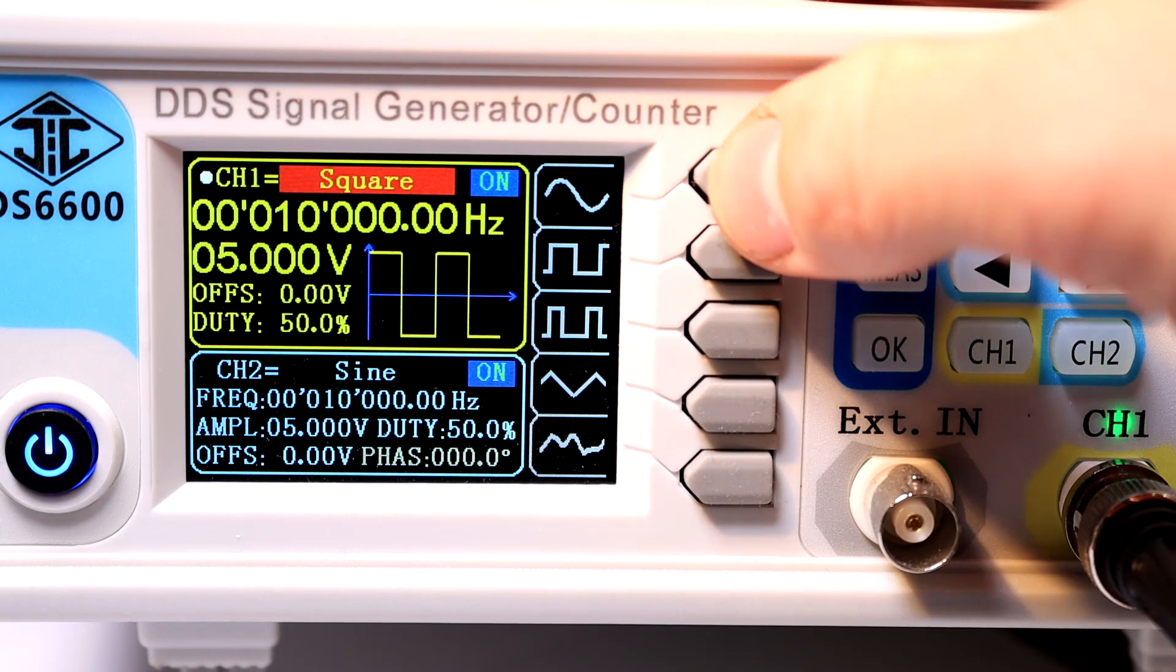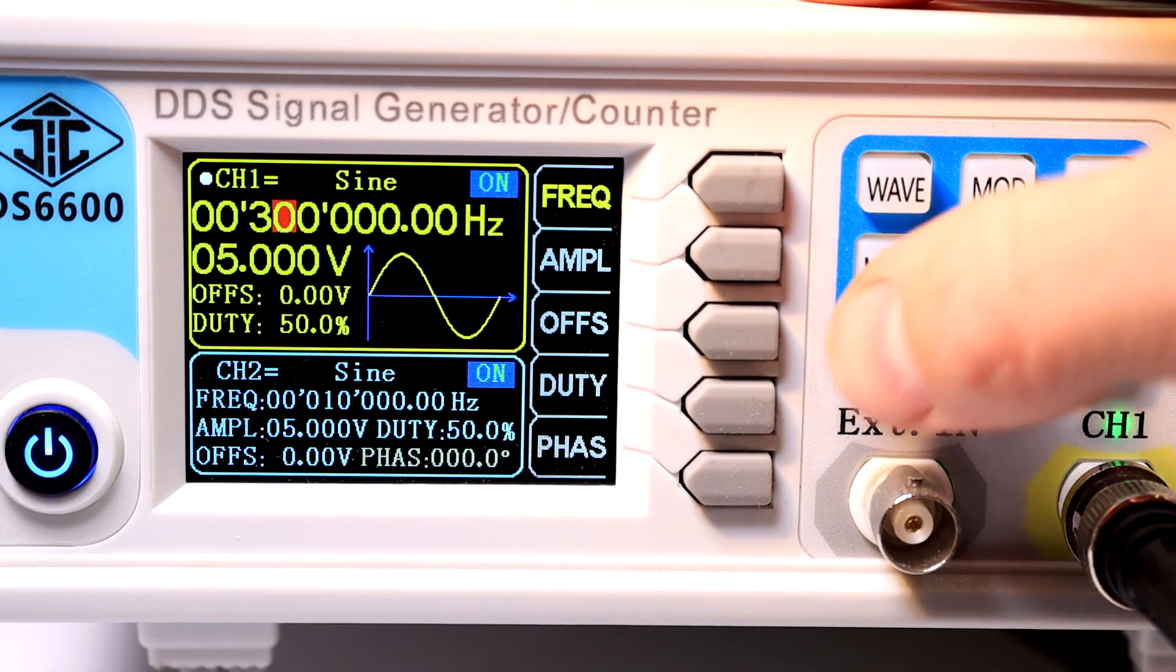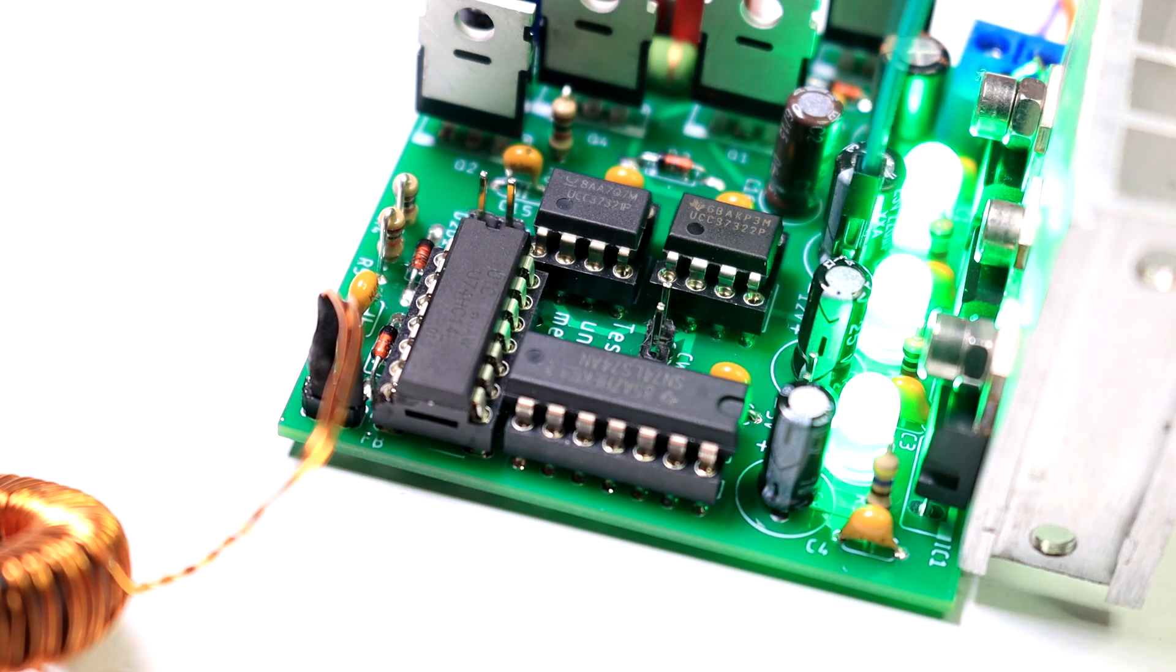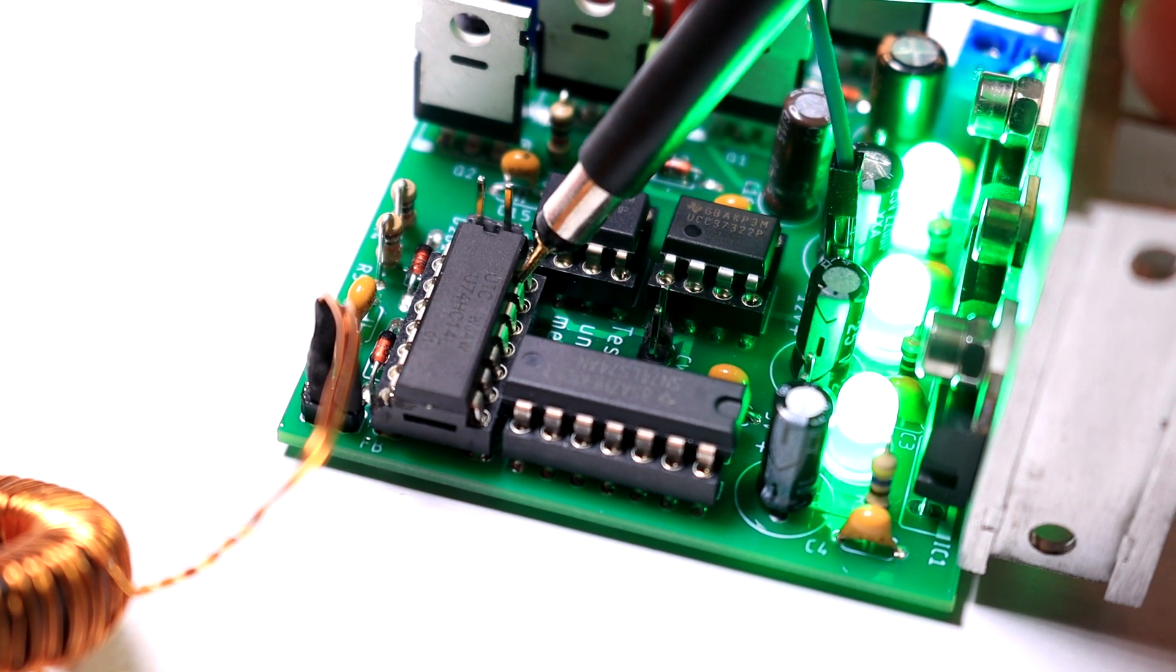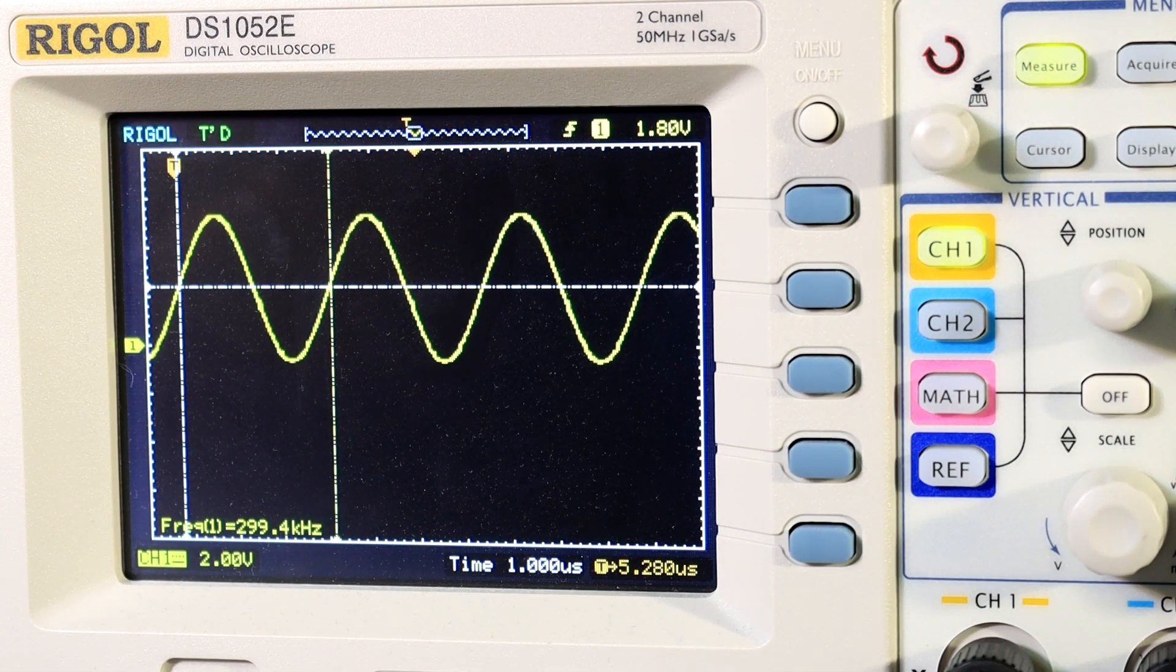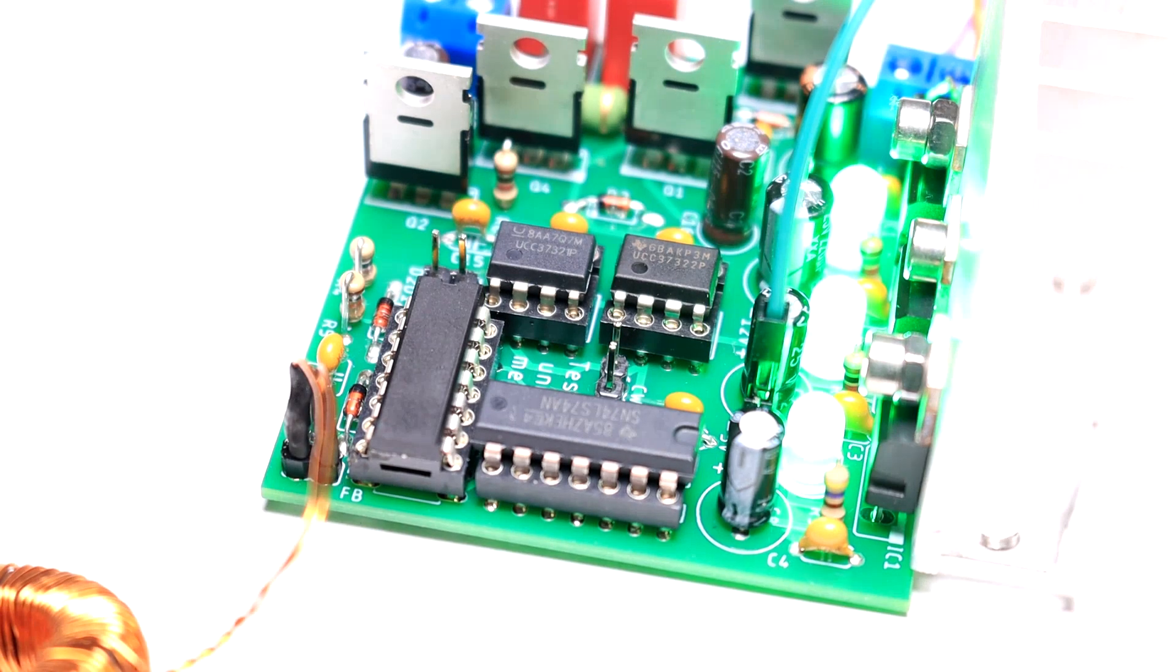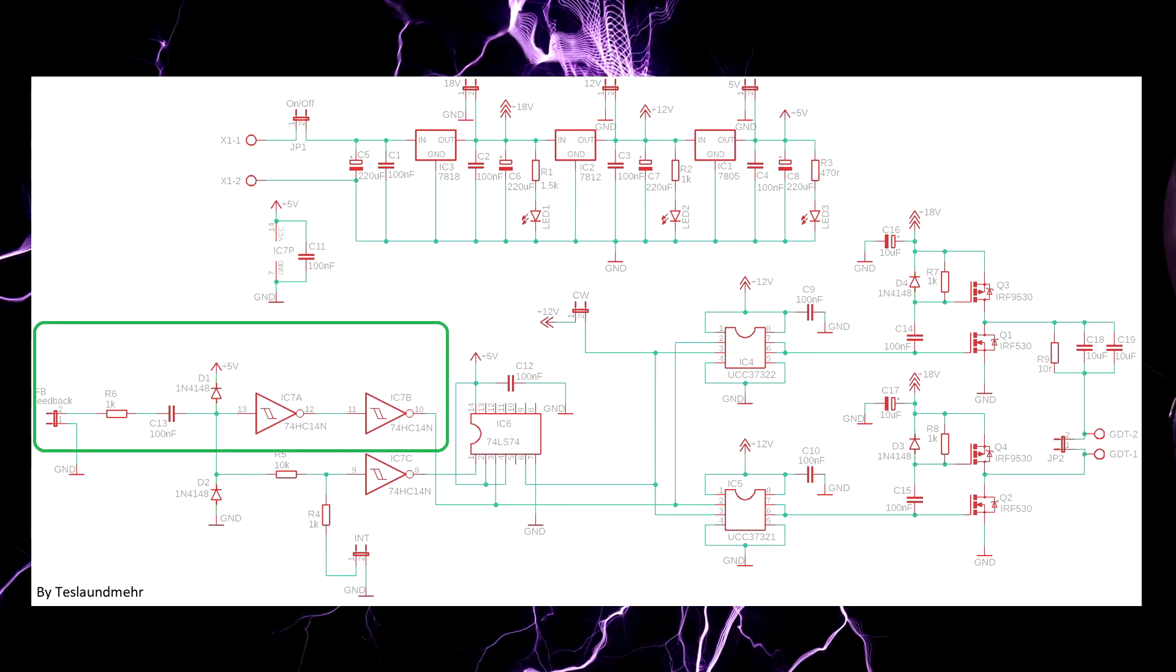Now we make the following settings on the function generator. We need a sine wave signal with a frequency of 300 kHz. The amplitude of the signal should be set to maximum. In my case this is 20V. If everything works now a sine signal should go into the 74HC14. We can measure this at leg number 13. Ha, very good. At the output of the 74HC14 we should now be able to measure a nice square wave signal. The output in our case would be leg number 10. So the feedback works excellent.